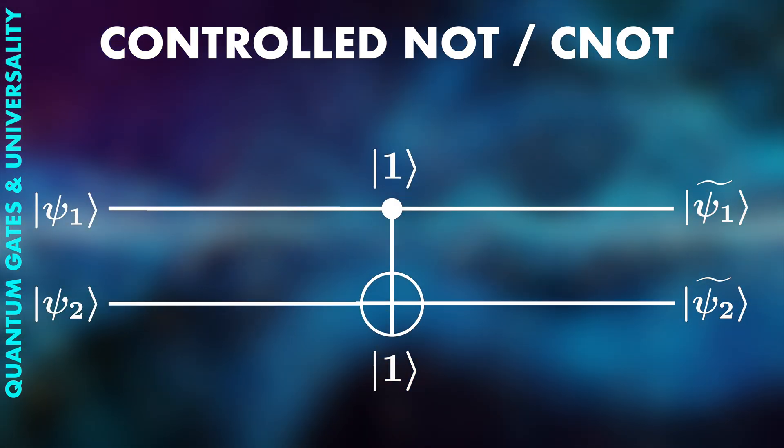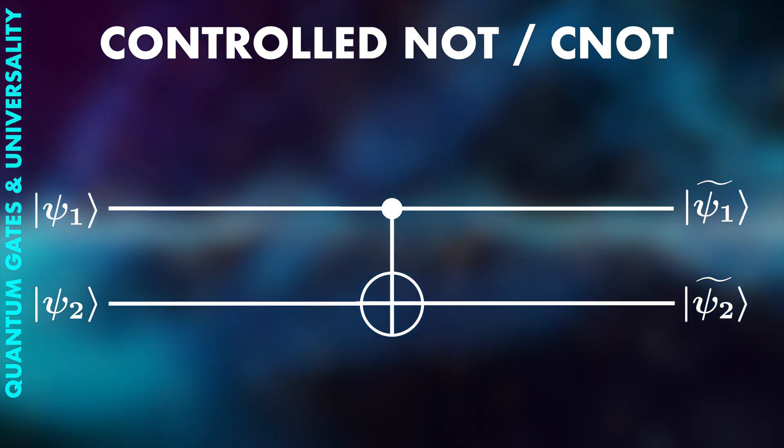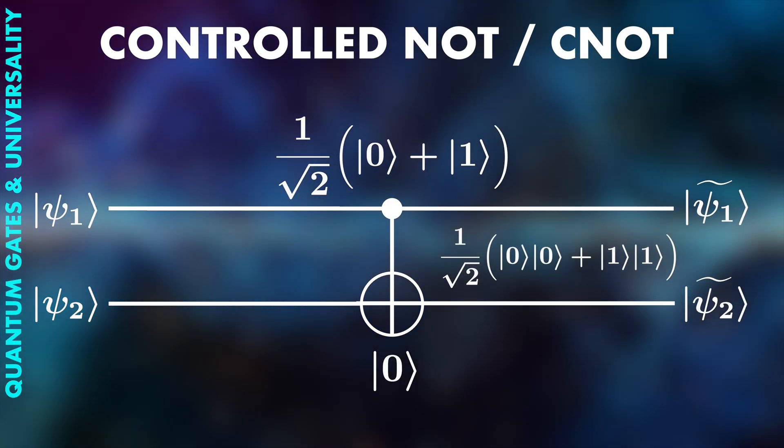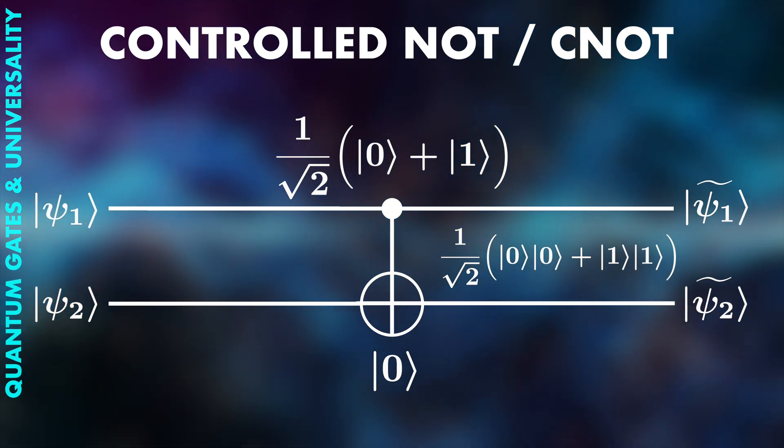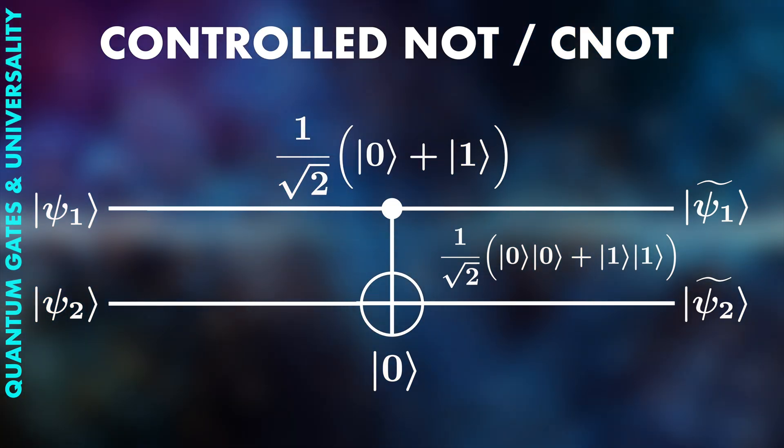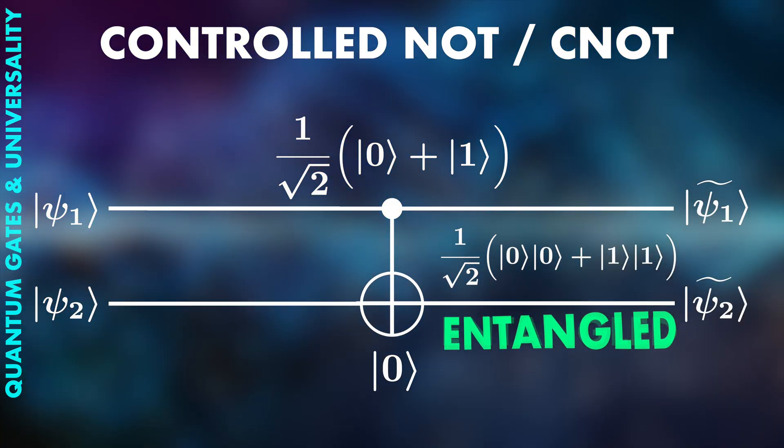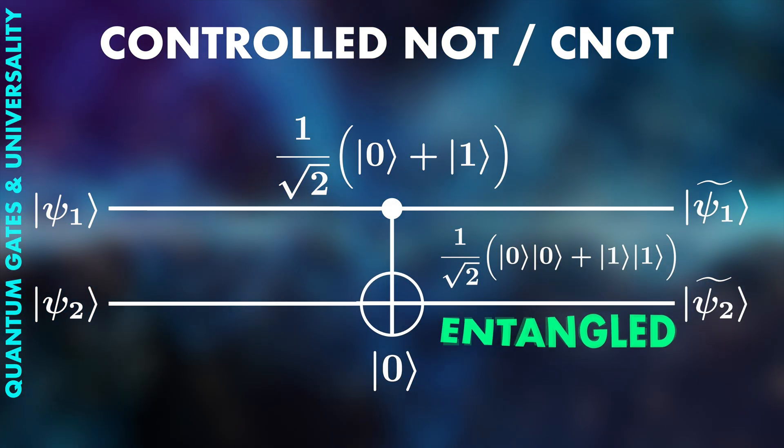Remember, quantum gates can also process superpositions, so when we have this superposition as trigger and 0 as target, we get this result. Note that this state can no longer be separated and is in fact fully entangled. Quantum algorithms are often based on having access to entangled states and the CNOT gate is the way to create them.